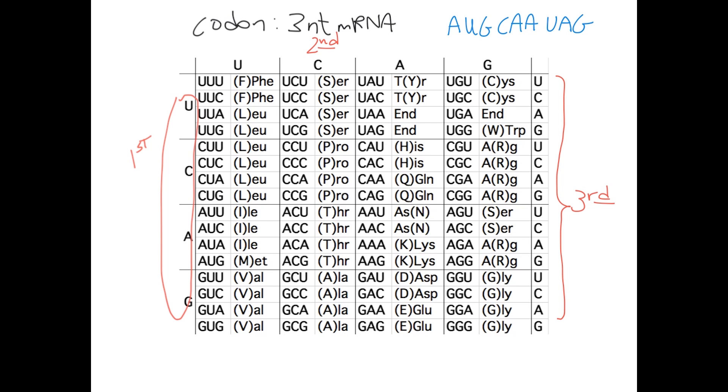You'd first look up the three nucleotides AUG. So you'd find A in the first position, U in the second position, and then G in the third, and that's methionine. And then CAA, you've got C in the first position, A in the second position, and A in the third position, that's glutamine, GLN, or Q.